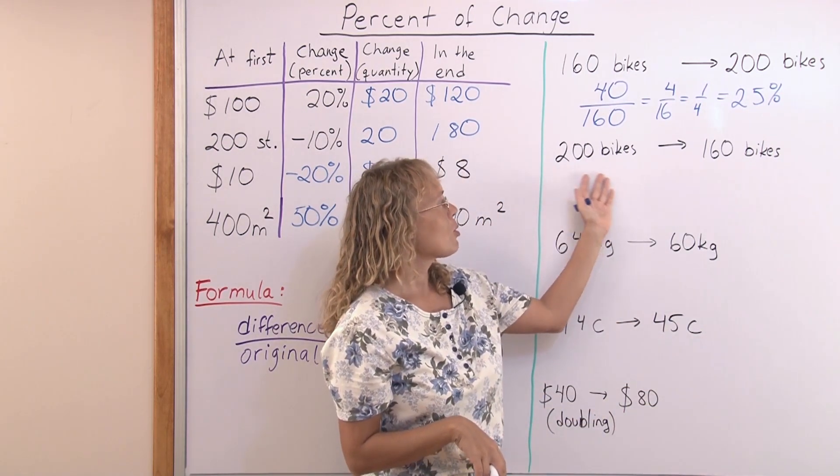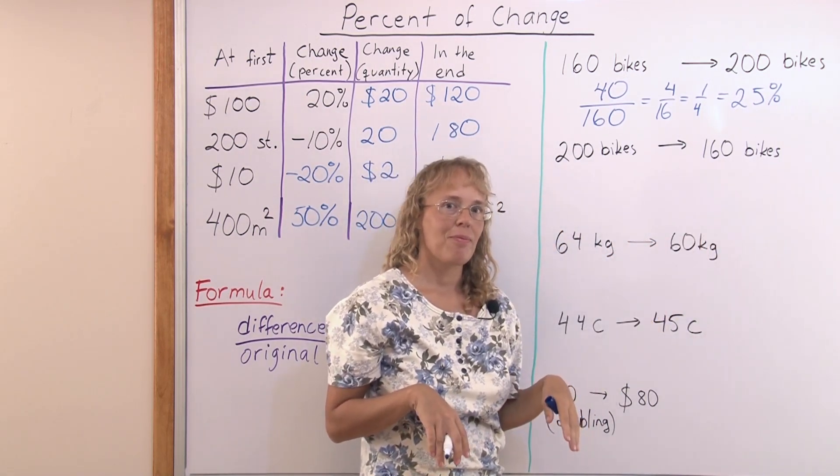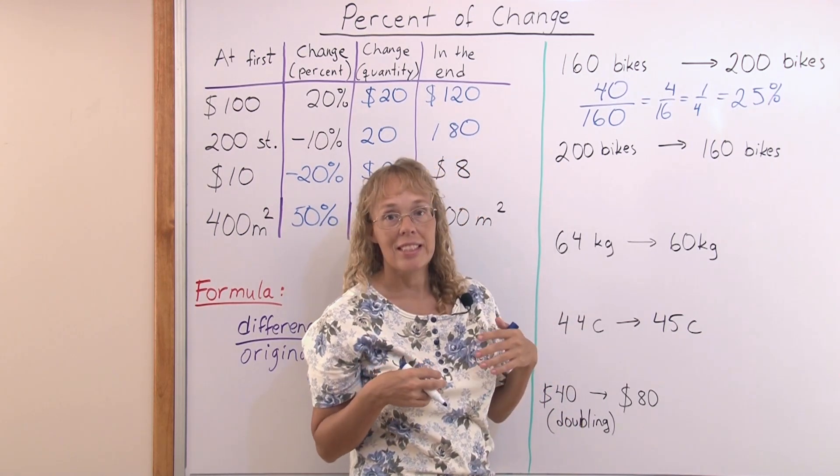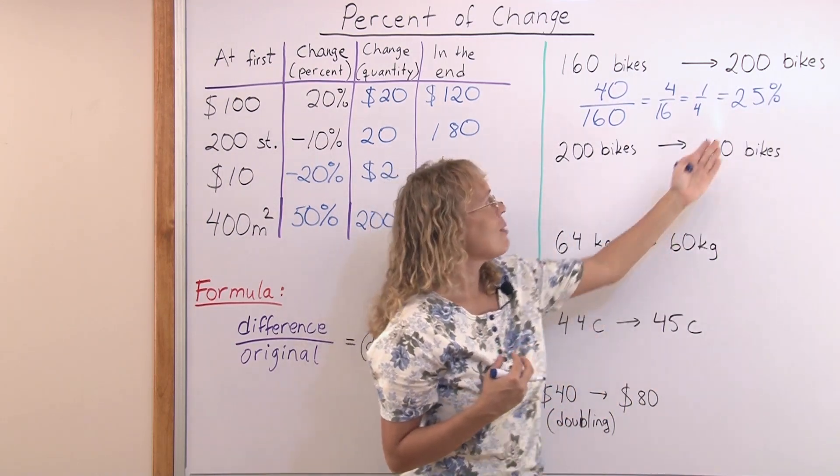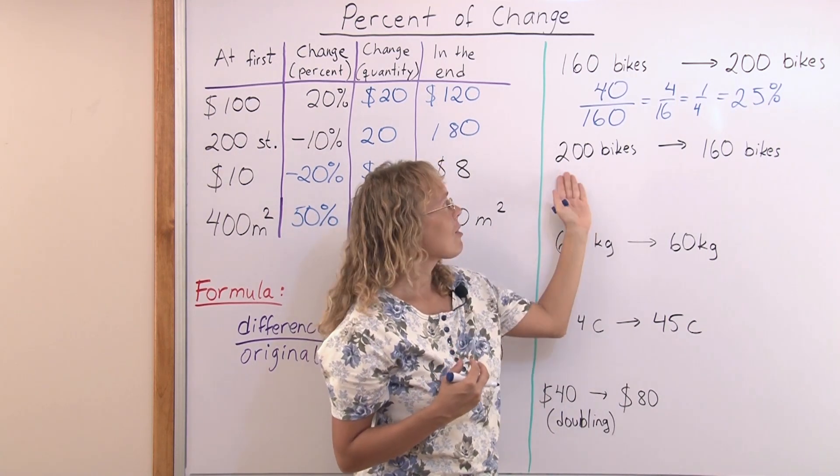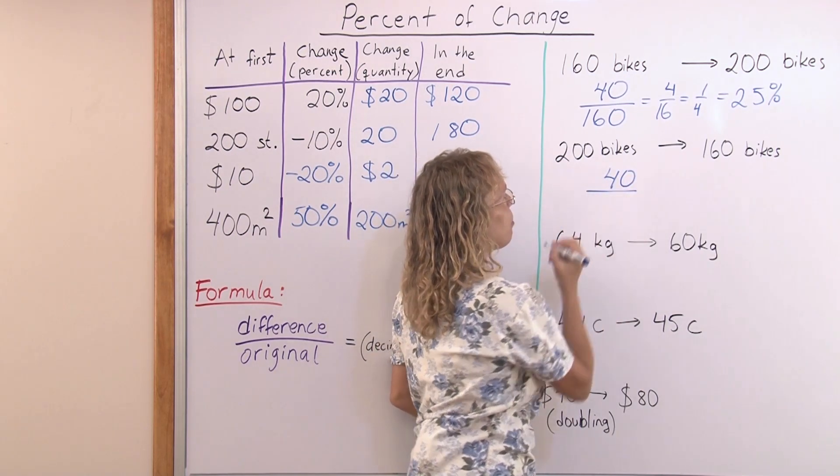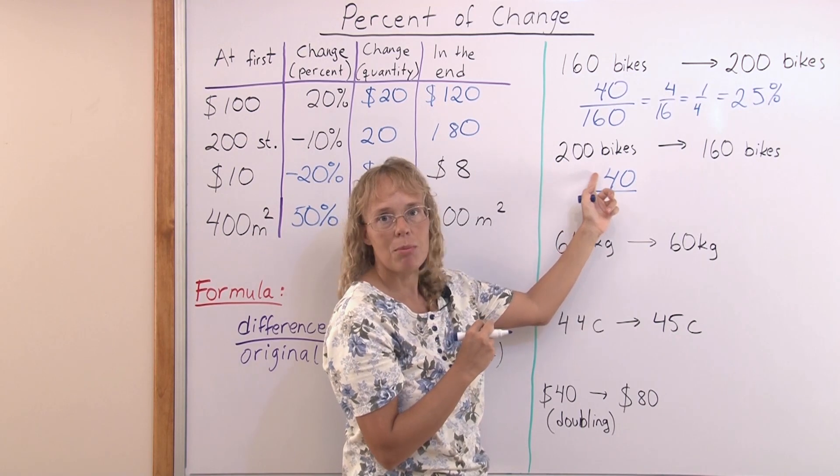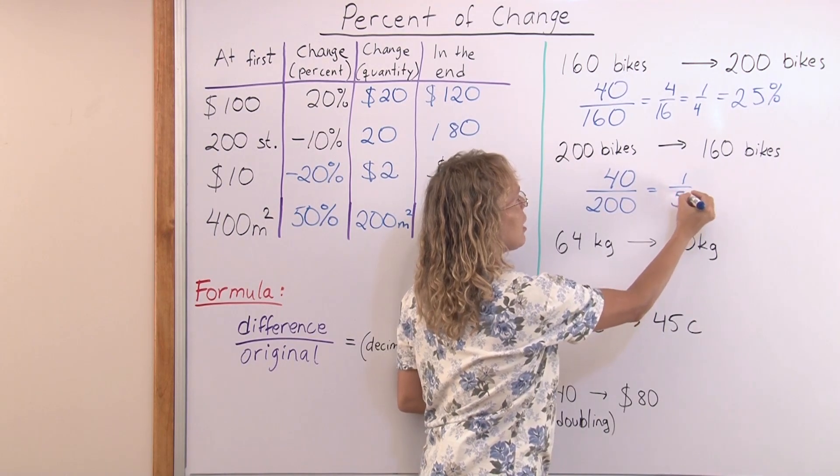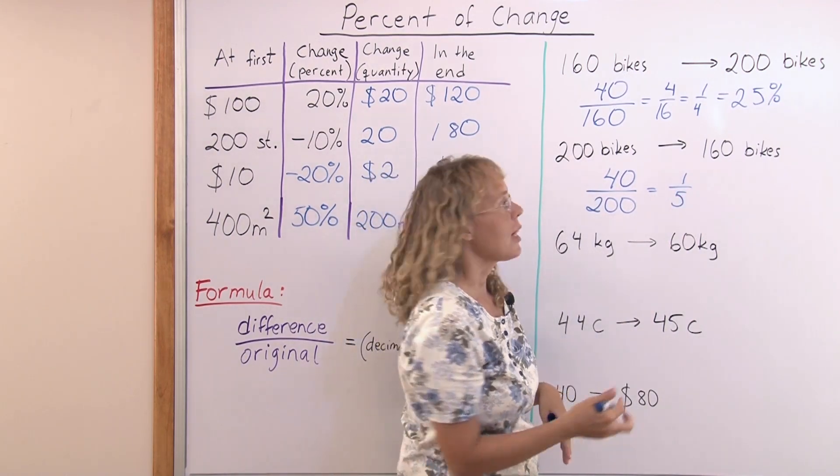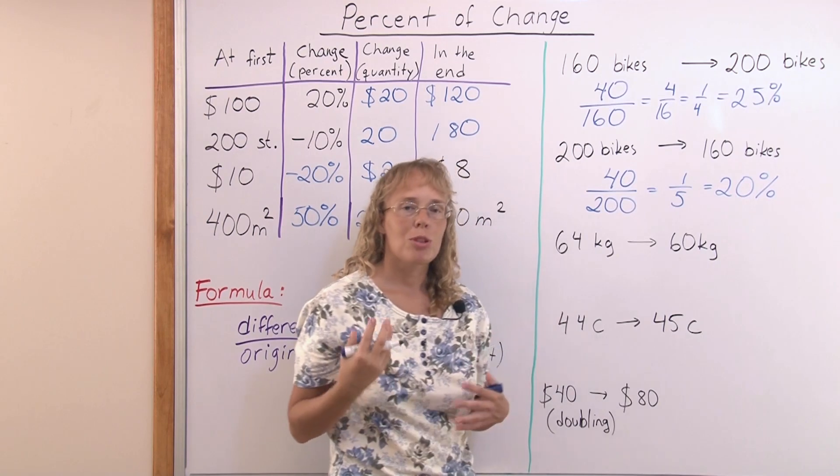Now let's say that they sold 200 bikes one month and then the next month they sold 160 bikes. The sales go down. Will the decrease in sales be also 25 percent? The answer is no. It is not the same as what we calculated here, because our base or our reference number here is different. The difference is again 40 bikes, but we compare it to the original and the original here, the reference number is 200 this time. And so this is one-fifth, which as a percent is 20 percent. So you need to be careful and not just assume things even if the numbers look easy.